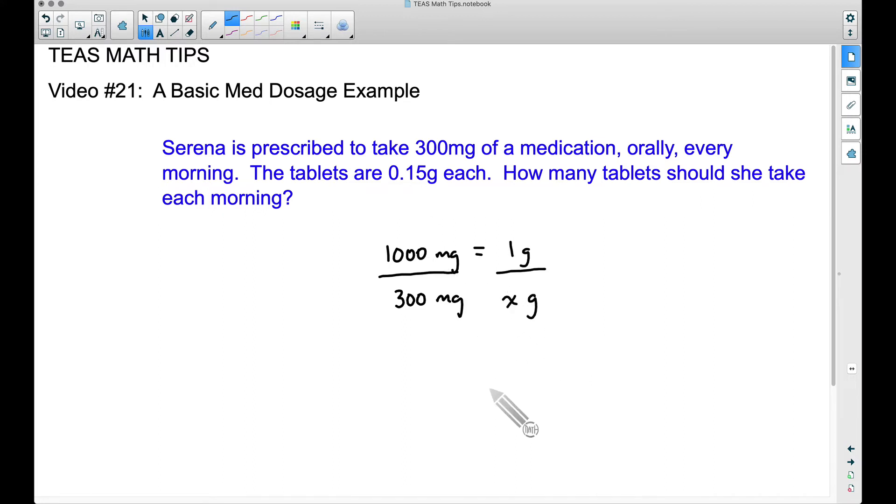So taking 1,000 times x, we have 1,000x. And this will be equal to 300 times 1, which is 300. To solve for x basic equation here, let's divide both sides by 1,000. Dividing by 1,000 over here, we'll cancel it out. Dividing by 1,000 over here will be 300 over 1,000.